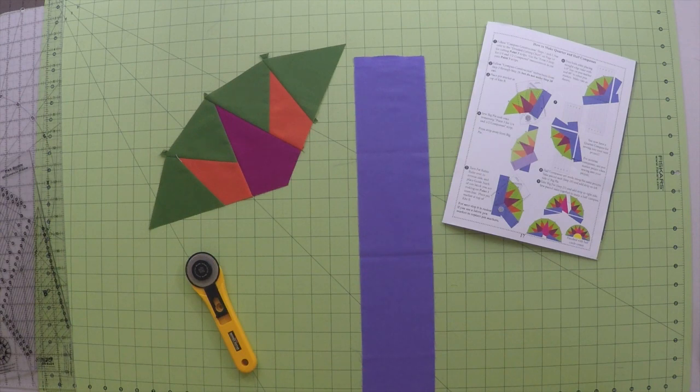This is an 18 inch quarter compass, so I have cut the point 3 strip 3 and 3 quarters inches wide. These strips are thinner to cut down on waste.